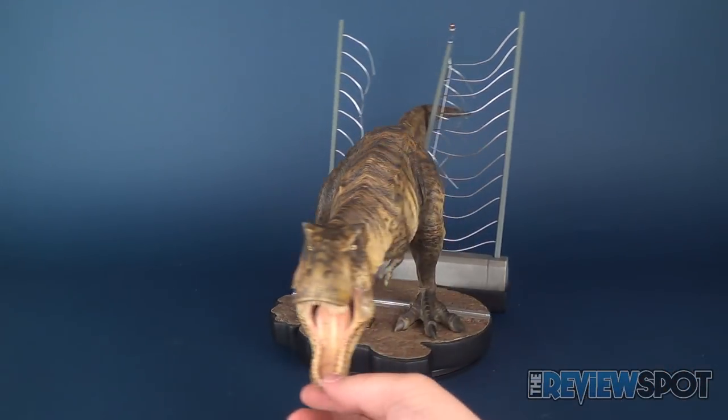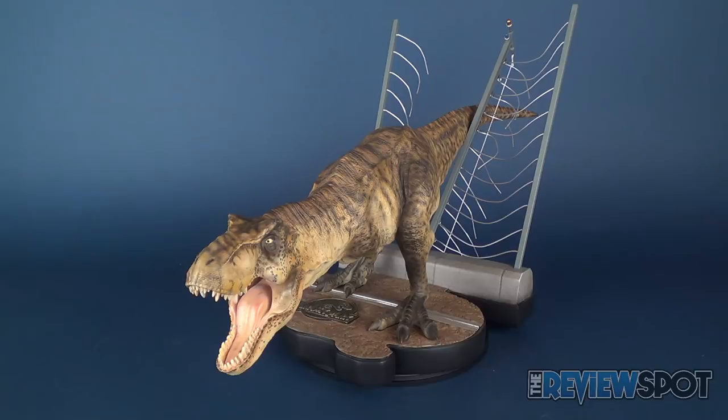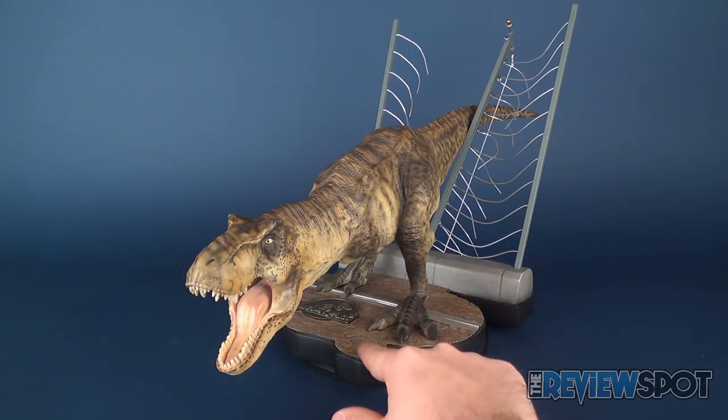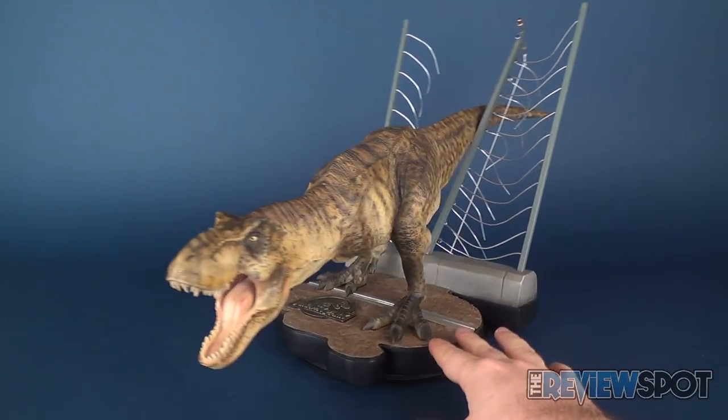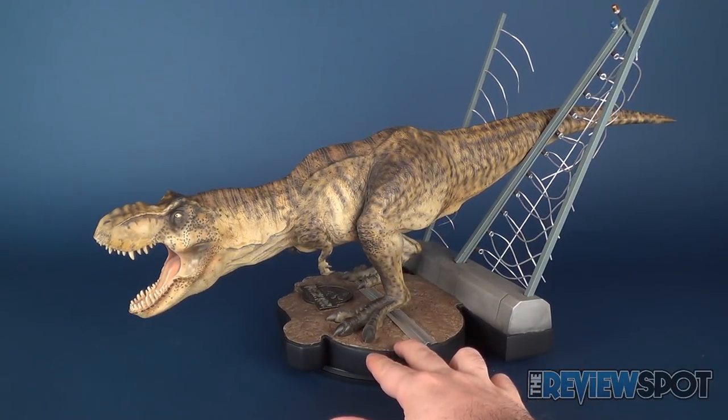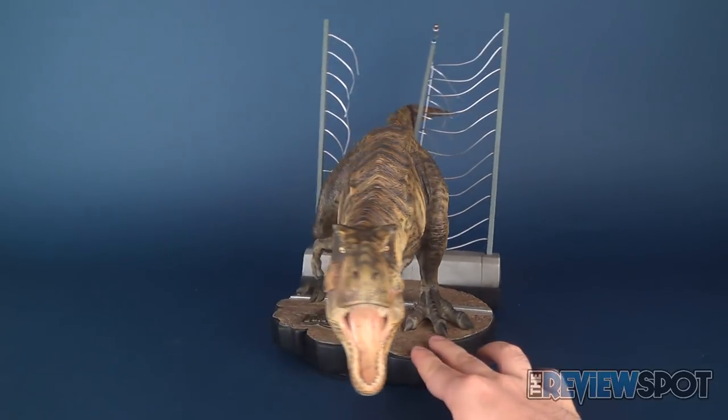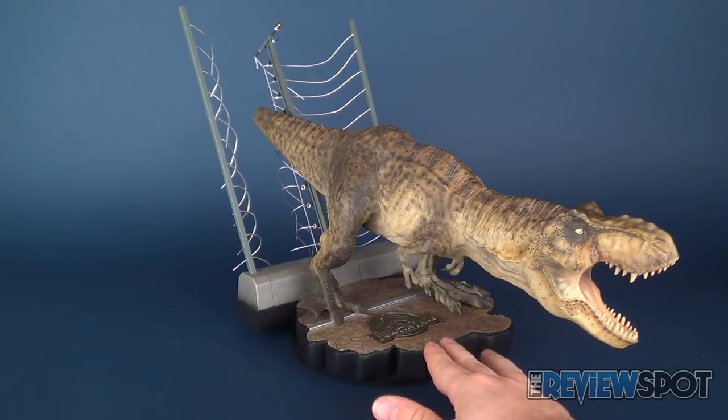If you guys are interested in picking this up, I'll put the link down below to Chronicle Collectibles. It's estimated shipping for around the first quarter of 2017, so it should be available pretty much now, and it's going to be for $549. So if you are a fan of Jurassic Park and a fan of this particular scene, this T-Rex will be right up your alley.